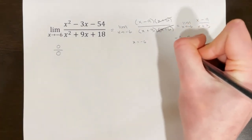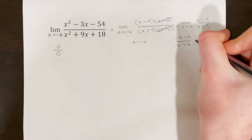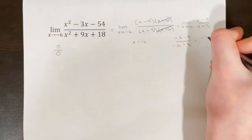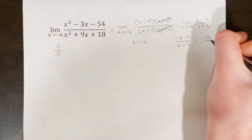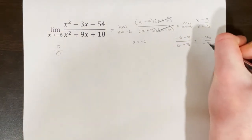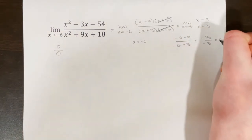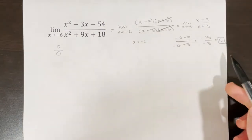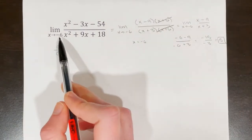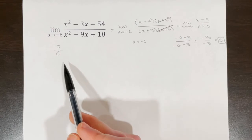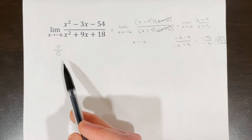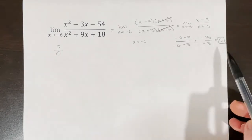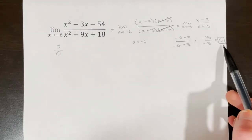Now we can directly plug in negative 6 as our x value. This becomes negative 6 minus 9 over negative 6 plus 3, which is negative 15 over negative 3, or 5. So that is our actual limit as x approaches negative 6. It is not 0 over 0, and it does not not exist — the limit does exist, and it's 5.